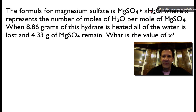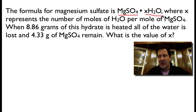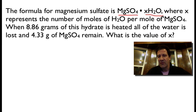In this problem we're going to consider two parts: one part being the magnesium sulfate, and the other part being the water. We're going to compare the ratio — the number of moles of each of those — and that will tell us the value for X.